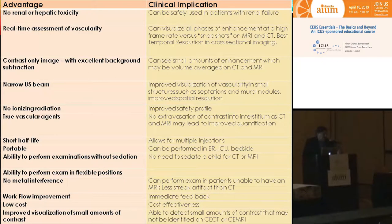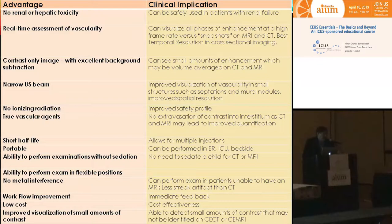We get excellent background subtraction on the contrast images, so we can see very small amounts of enhancement that can be volume-averaged in CT and MR. This is very critical in indeterminate renal masses with septations — with ultrasound contrast we can see small tumor nodules, literally a millimeter in size, hanging off the septations that we don't see at all on CT and MR. A narrow ultrasound beam improves visualization of these small structures such as septations and mural nodules and gives us increased spatial resolution.